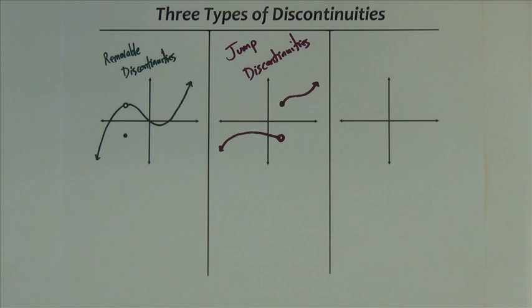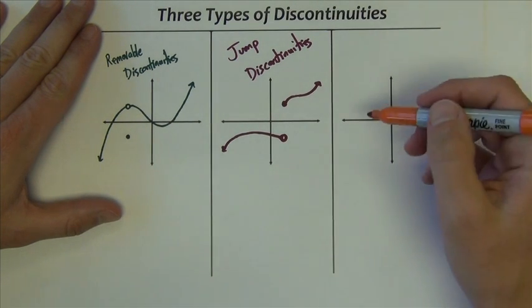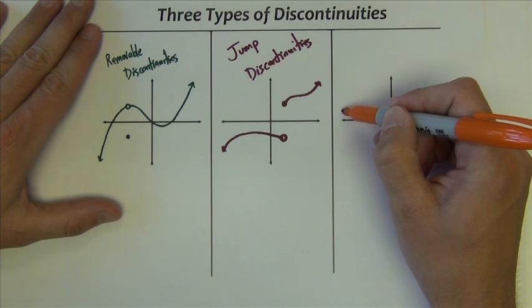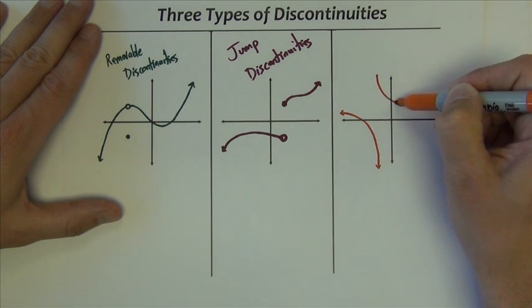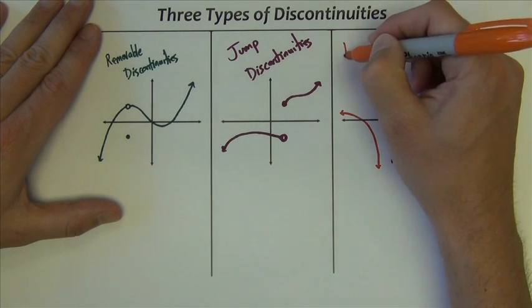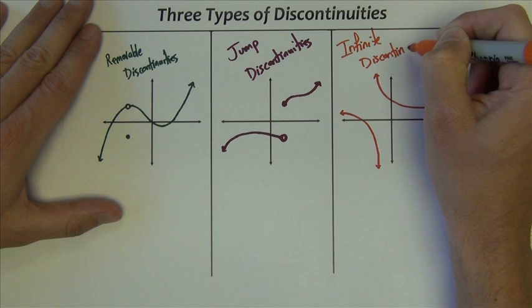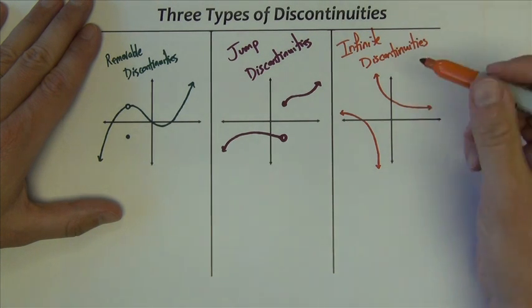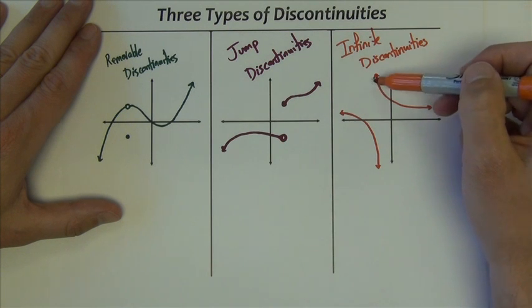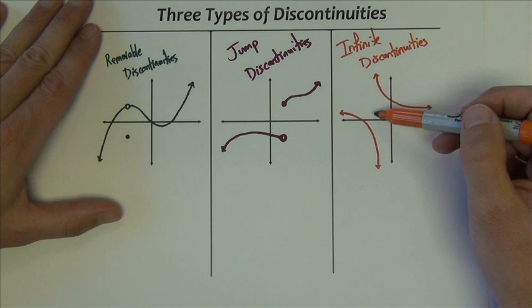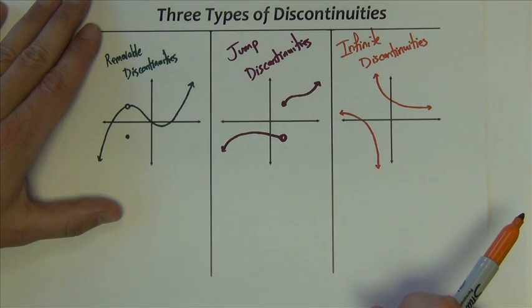And then finally, one more discontinuity. These we study a lot in this particular course. Maybe you've got a graph that does this. These are called infinite discontinuities. The graph goes down and then we've got to jump up here. But it goes down forever and it goes up forever here. The function approaches infinity at this particular x value. So three types of discontinuities that you might run into in this particular course.